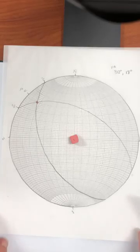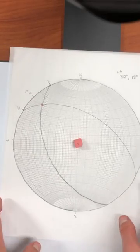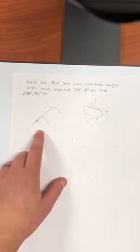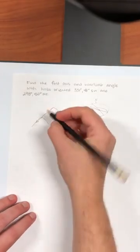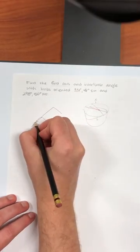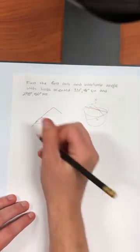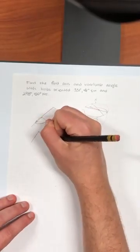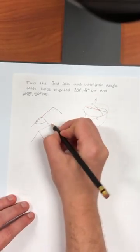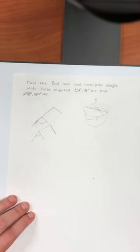Next part of the problem is to find the interlimb angle. So let's think about what that actually is. In this example of a pretty cylindrical fold, the interlimb angle is just the angle between these fold limbs. So you could imagine if I made an idealized fold, made it like a little tent, that's the interlimb angle, the angle between the limbs.